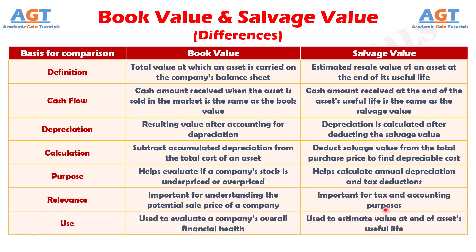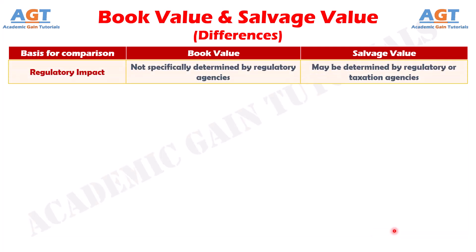Number seven: book value is used to evaluate a company's overall financial health, whereas salvage value is used to estimate the value of an asset at the end of its useful life. Number eight: book value is not specifically determined by regulatory agencies, whereas salvage value may be determined by regulatory or taxation agencies.